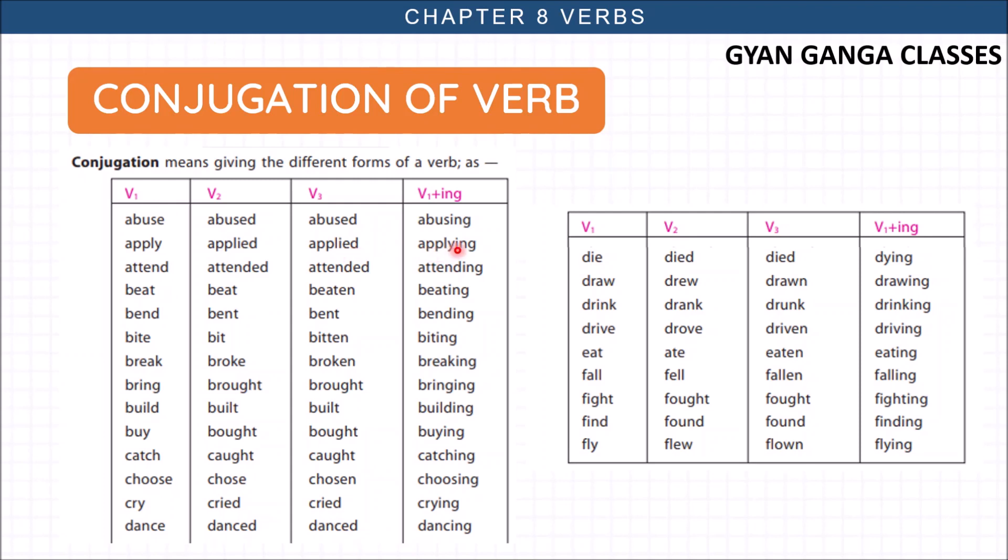Attend, attended. Simple, we just add ed, attended, attending. Beat - now this is a different case. Here base form and past form is same - beat, beat. But the past perfect is beaten and beating. Bend, bent, bent, bending. Bite, bit, bitten, biting. Break, broke, broken, breaking. When we say present tense - he breaks or I break the road. Why? Because we don't use s with I. He, she, it - with them we use s.